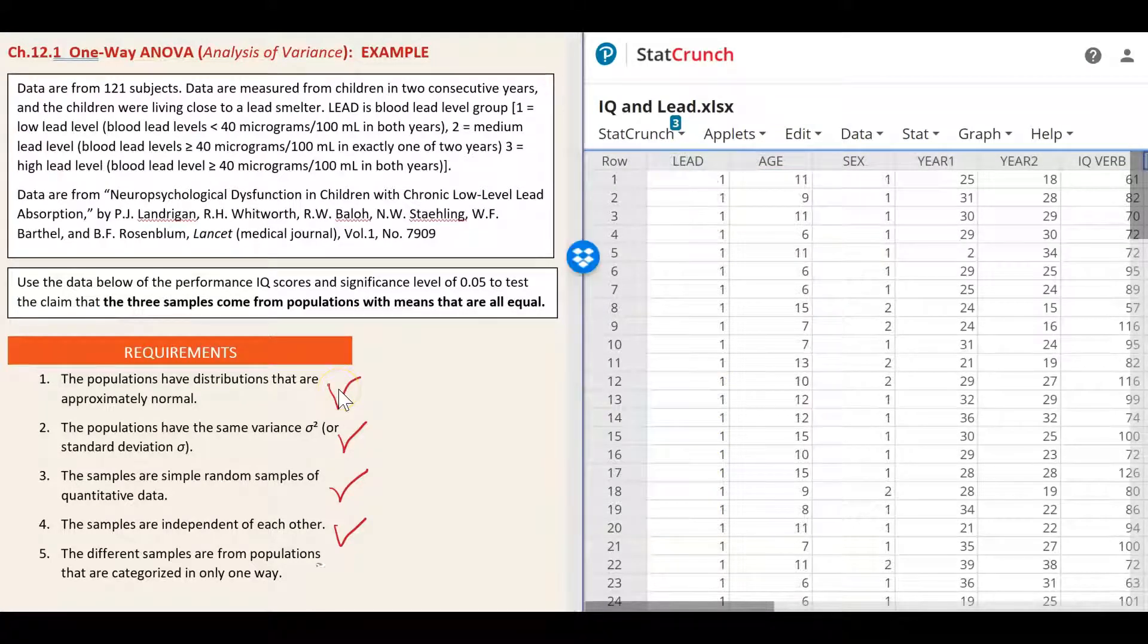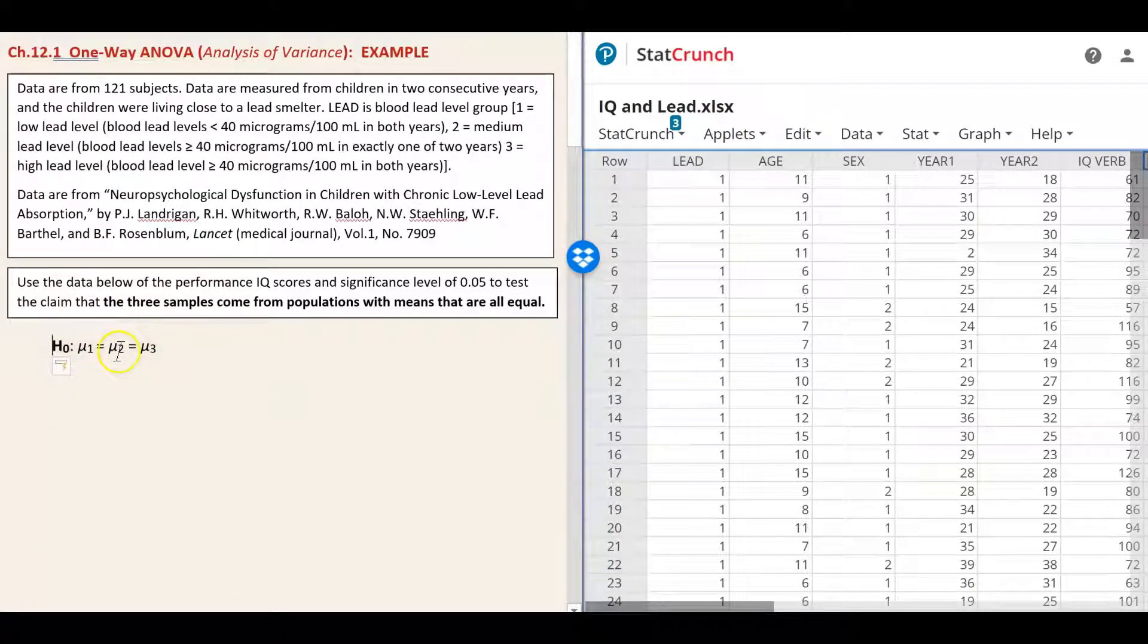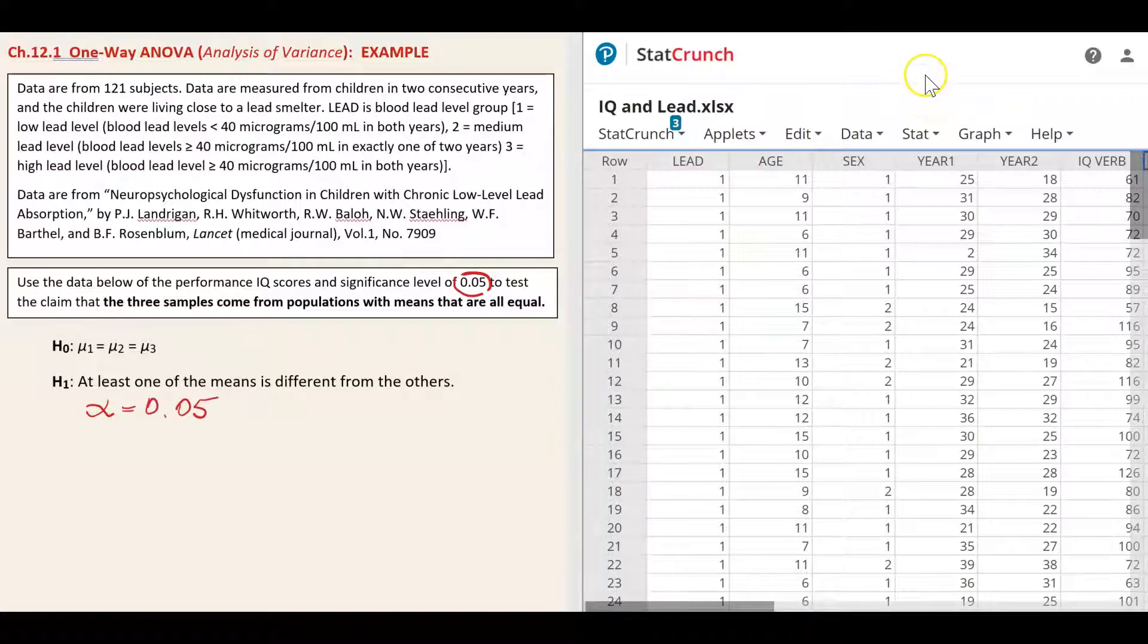So all requirements are met and we can proceed with the hypothesis testing. Null hypothesis is that all three means from the three populations are equal. Alternative hypothesis is that at least one of the means is different from the others. We will use alpha level of 0.05 to test this hypothesis and we will use the help of StatCrunch.